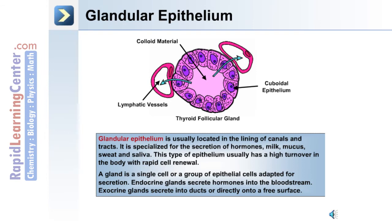A gland is a single cell or group of epithelial cells adapted for secretion. There are two types: endocrine glands, which secrete hormones into the bloodstream, and exocrine glands, which secrete into ducts or directly onto a free surface.